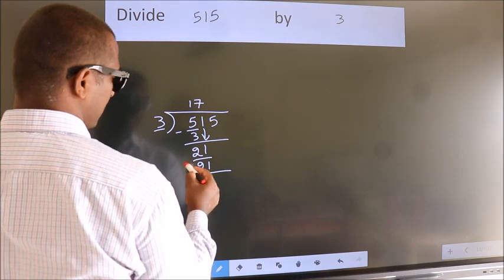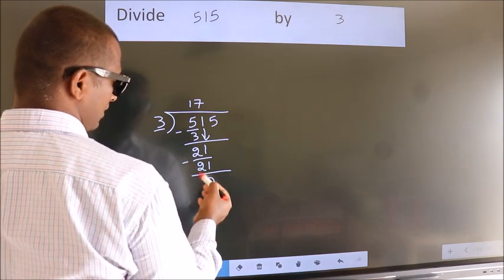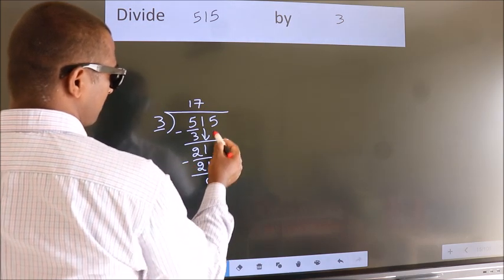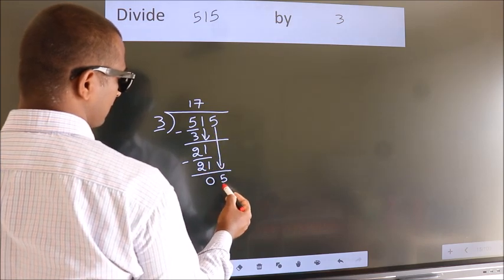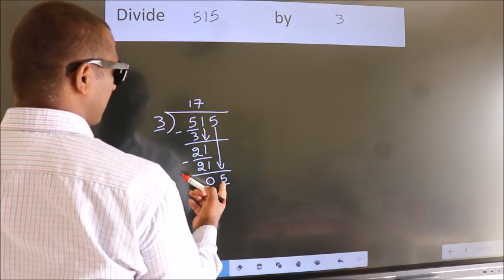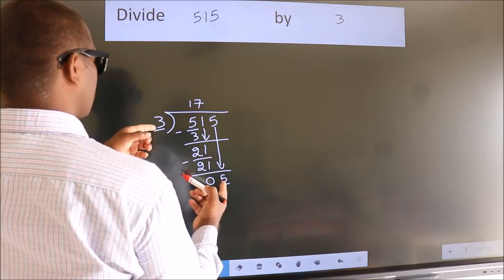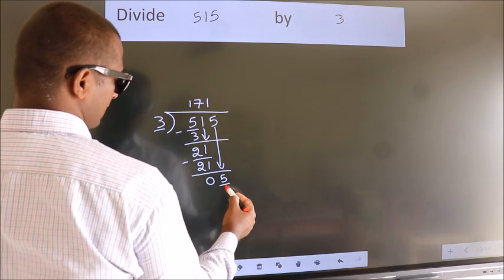Now we subtract, we get 0. After this, bring down the beside number, so 5 down, so 5. A number close to 5 in 3 table is 3 1s 3.